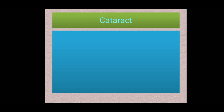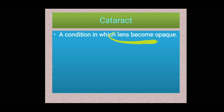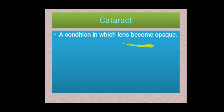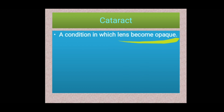The first disease we are going to discuss is cataract. Cataract is a condition in which the lens becomes opaque in nature — opaque means it does not allow any light to pass through. The lens is usually transparent, which allows light rays to pass through, but during this condition the lens becomes opaque, taking on a white, cloudy appearance, which results in the disease called cataract.